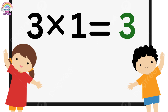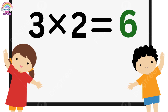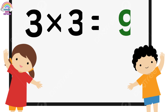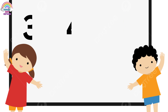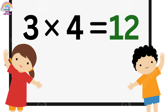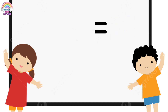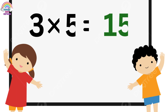Three ones are three. Three twos are six. Three threes are nine. Three fours are twelve. Three fives are fifteen.